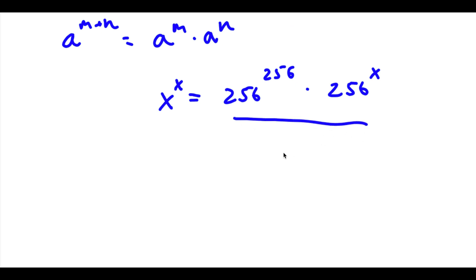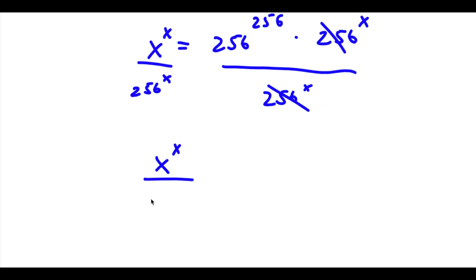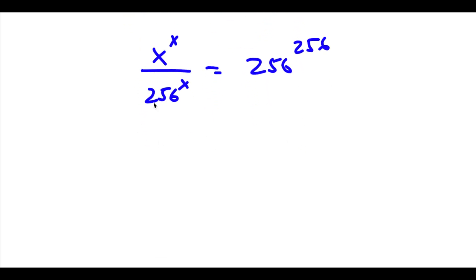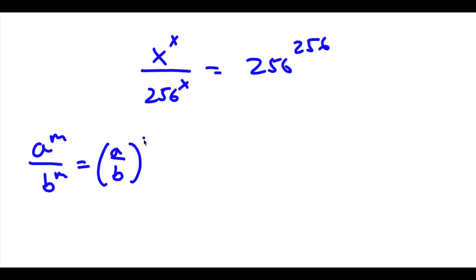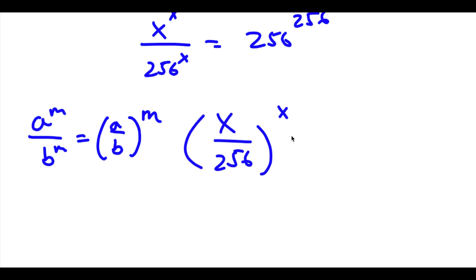Now I'm going to go ahead and divide both sides by 256 to the power of x. So these two cancel out and I'll be left with x to the power of x over 256 to the power of x is equal to 256 to the power of 256. Now if I have something in the form a to the power of m over b to the power of m, this equals a over b to the power of m. So x to the power of x over 256 to the power of x equals x over 256 to the power of x, which is equal to 256 to the power of 256.